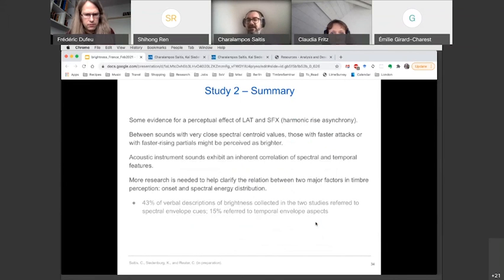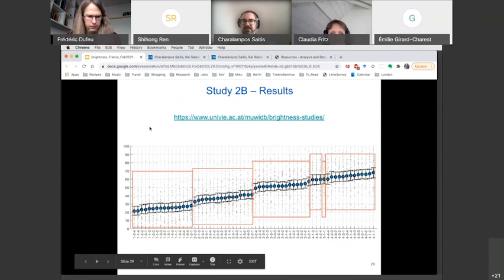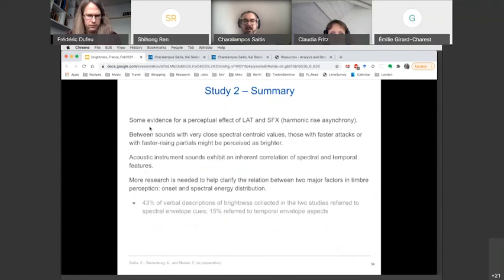So there is some evidence for a perceptual effect of attack time and harmonic rise asynchrony. But of course, more research and perhaps different type of stimuli could shed better light on this kind of questions. What seems to happen is that between sounds with very close spectral centroid values, those with faster attacks or with faster rising partials might be perceived as brighter. And if you examine this very carefully, you can actually see some of these things repeated for certain values of the parameters. And of course we should always keep in mind that acoustic instrument sounds, because we did see an effect of attack time in the musical stimuli, the non-synthetic stimuli. And this might be because real sounds exhibit an inherent correlation of spectral and temporal features that we still have not managed to really have an experimental design where we can disentangle these dimensions.